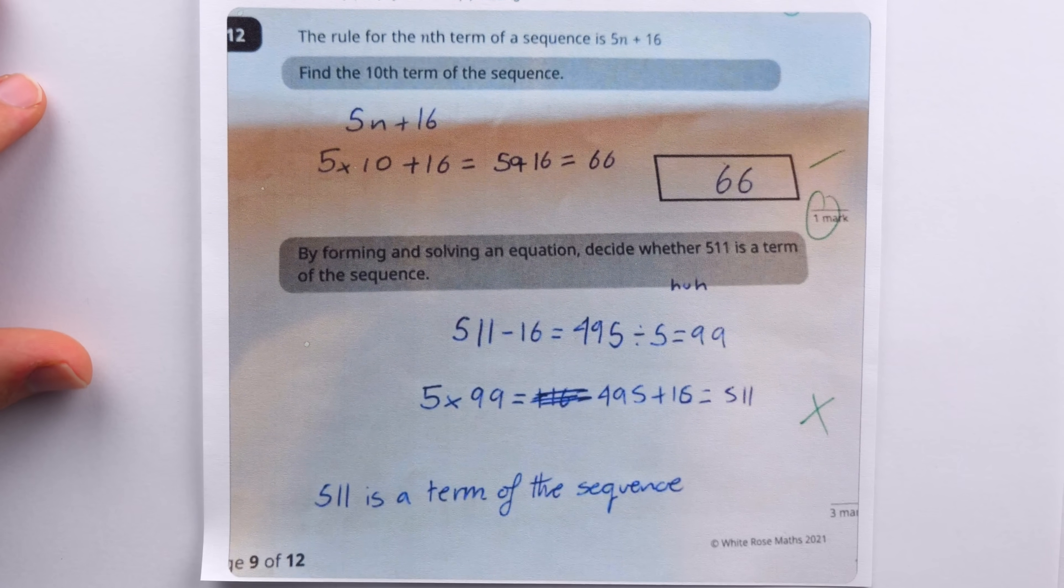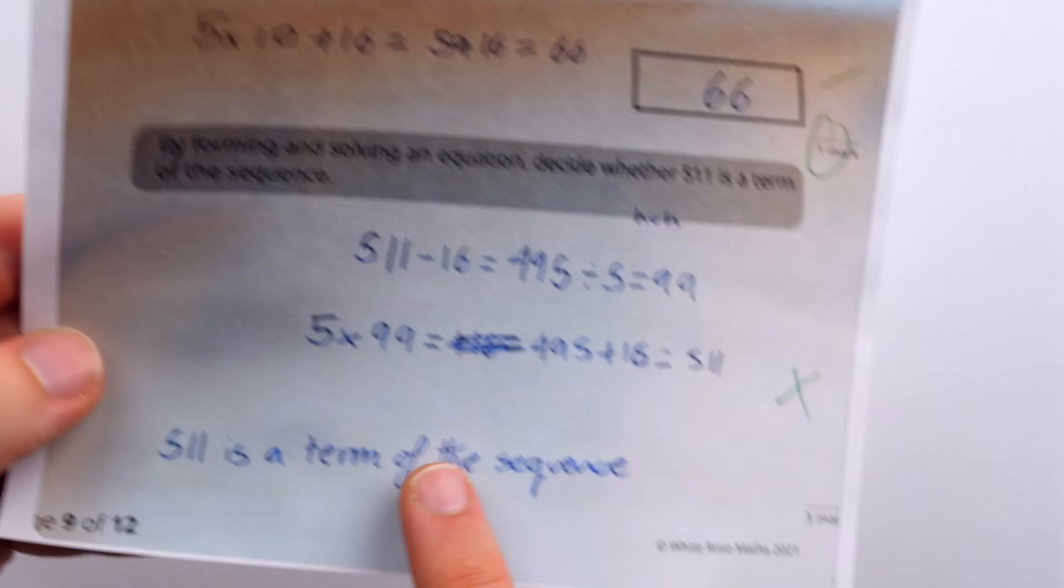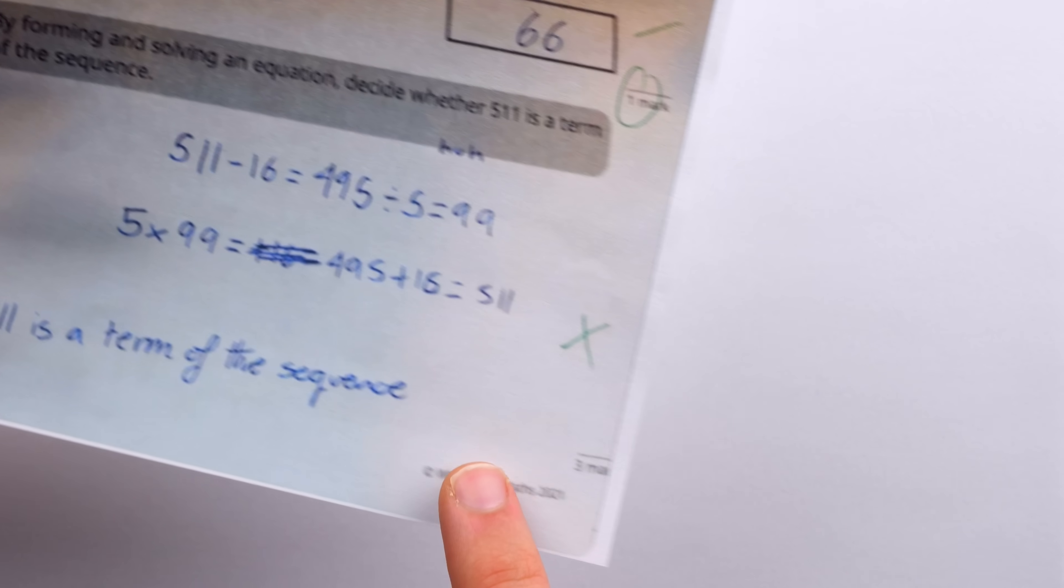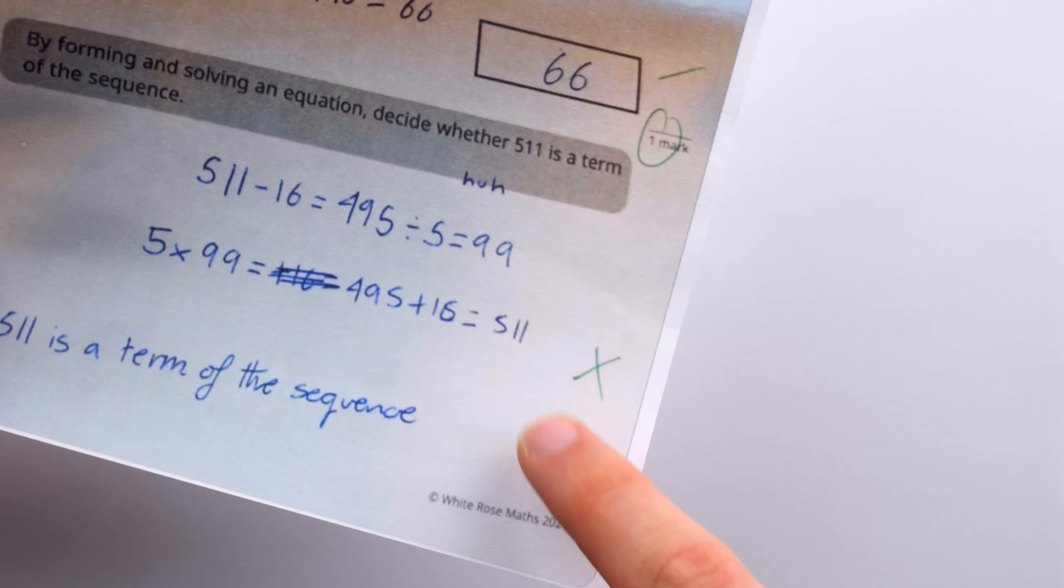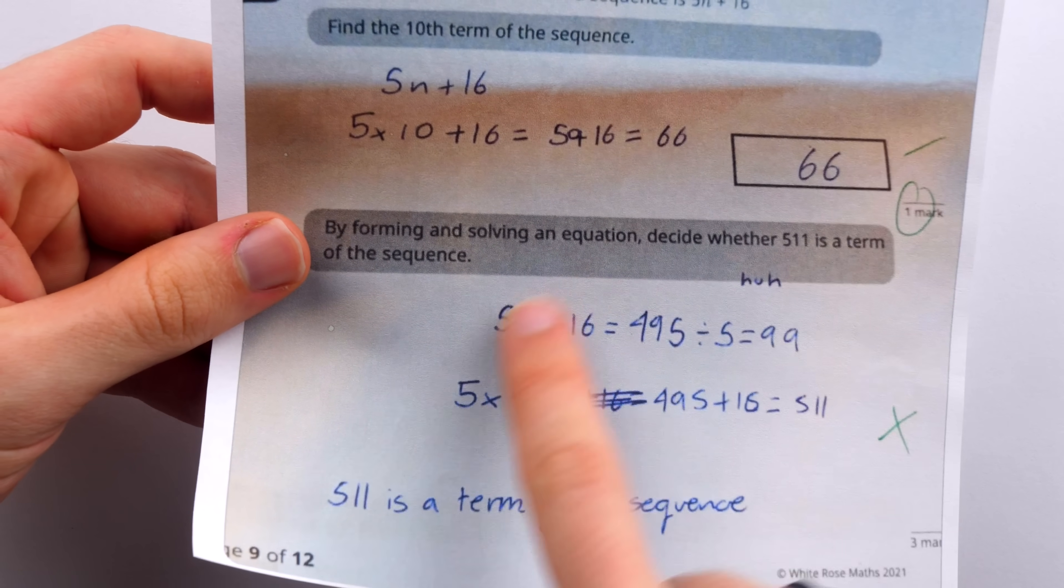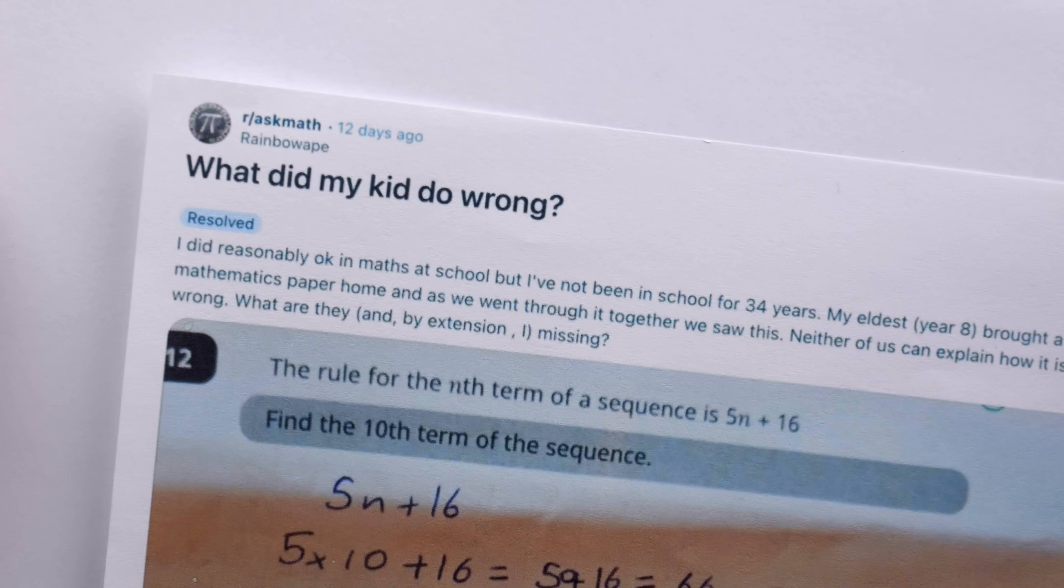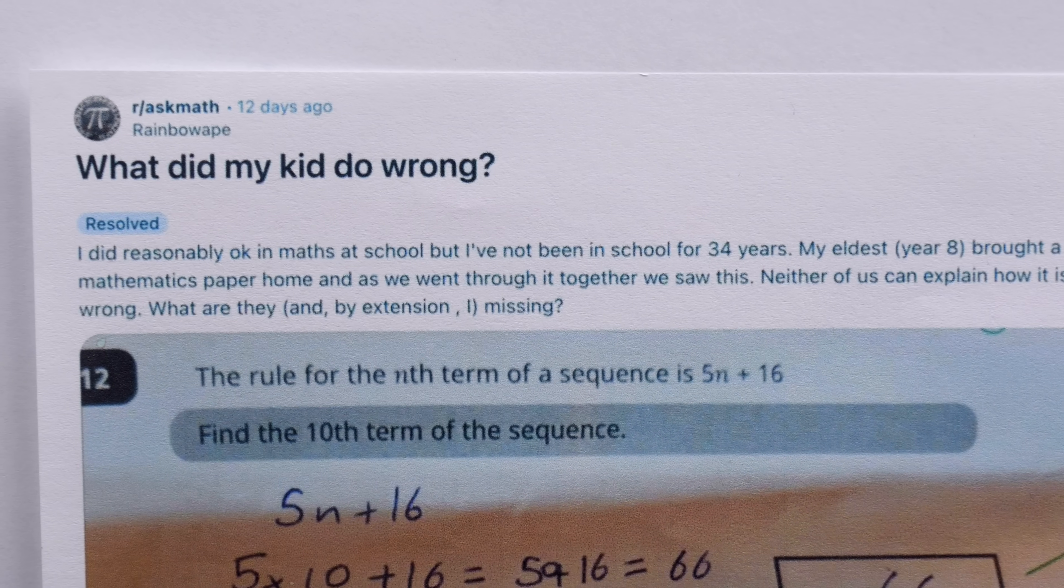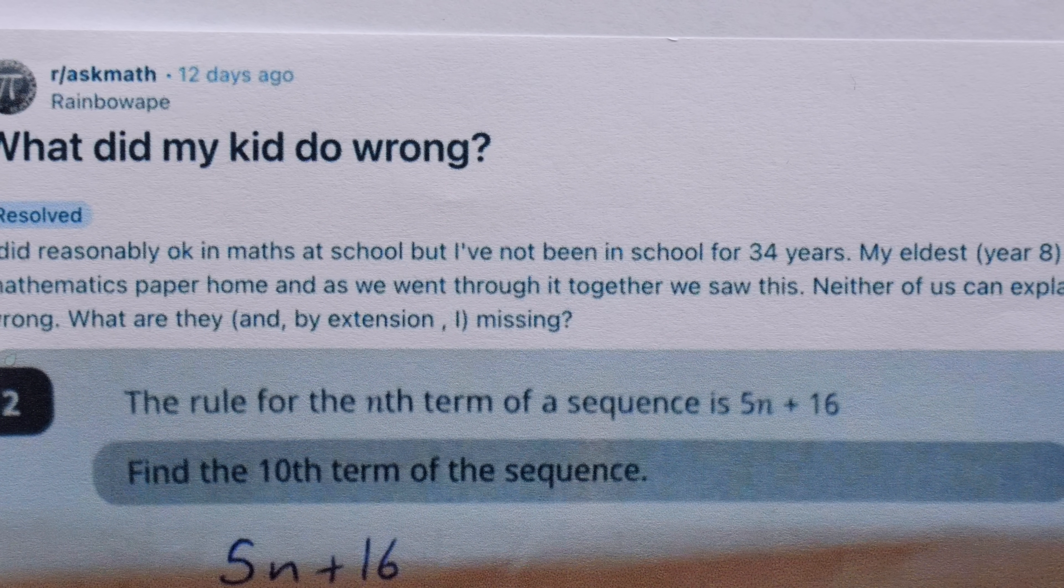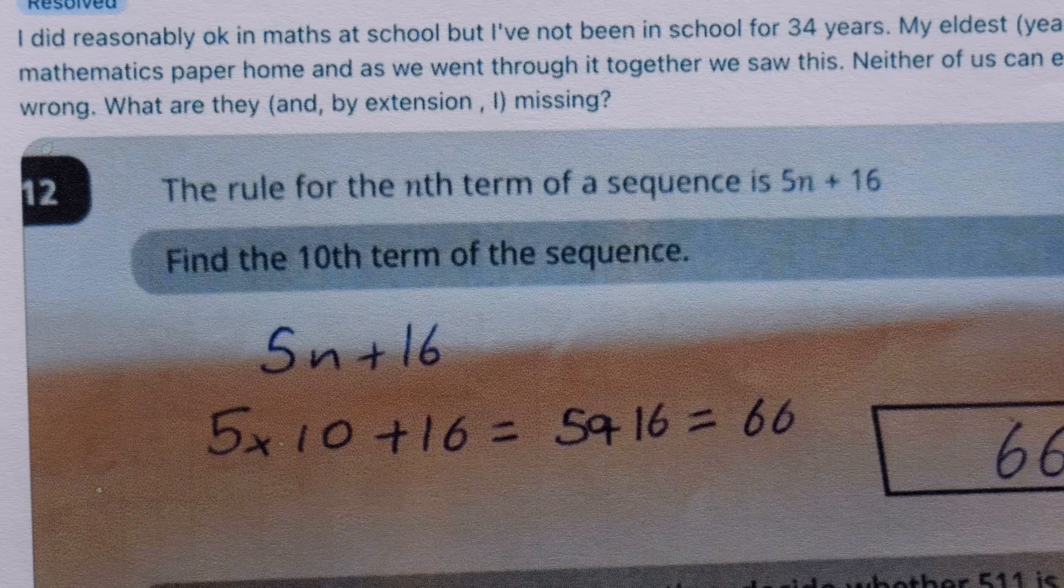What won't be definitive is people's takes on the teacher's grading. The student has provided the correct answer to a question, concluding that 511 is a term of a particular sequence, and they have received no marks. And not only was their answer correct, but so too was their reasoning. So let's take a look at this problem and see if we can determine what the kid did wrong. The OP's eldest child is in year 8 and brought this core mathematics paper home.